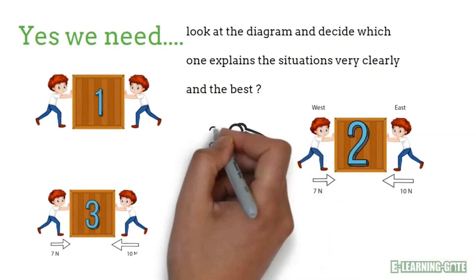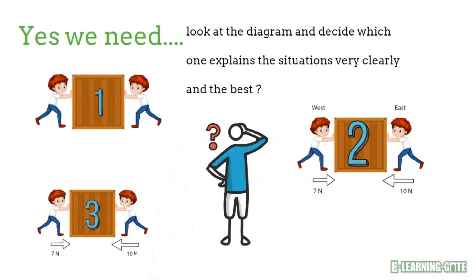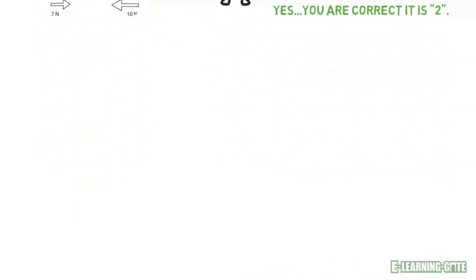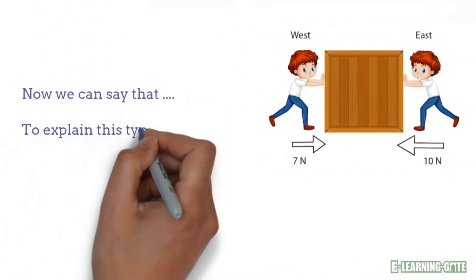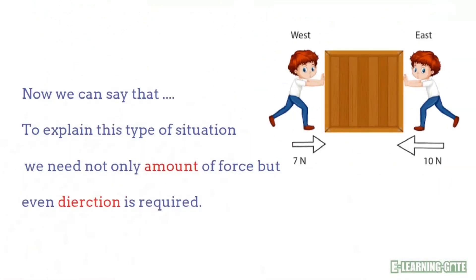It is easy to guess. Your guess is correct. It is diagram two, which explains the situation perfectly. Now we understood that to explain this type of situation, we need amount as well as direction.